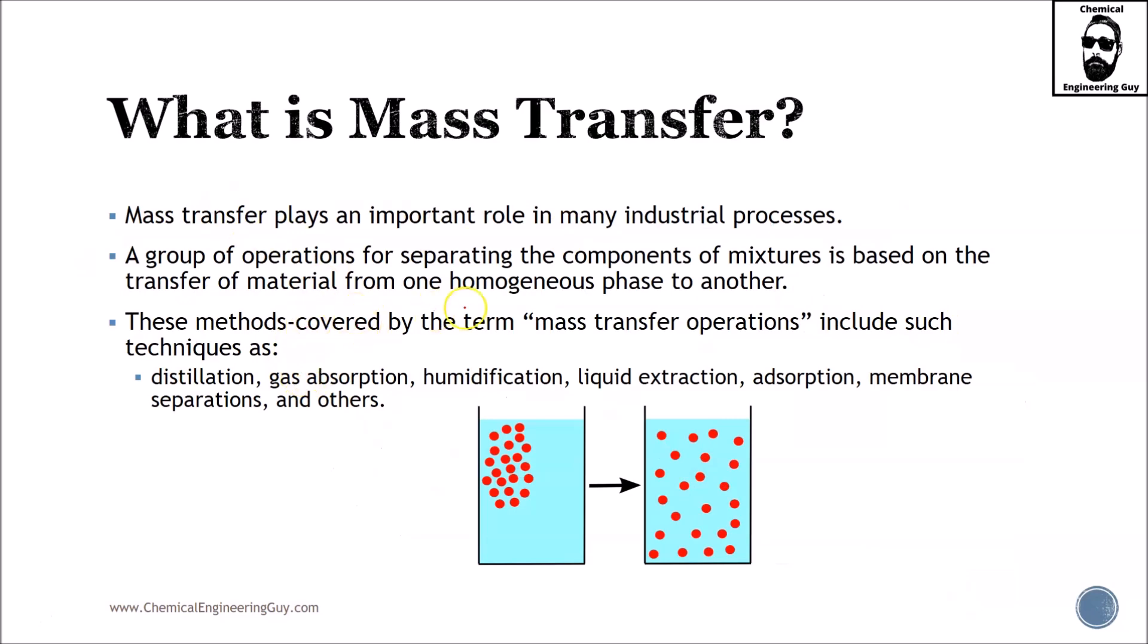Mass transfer plays an important role in many industrial processes. A group of operations for separating the components of mixtures is based on the transfer of material or mass transfer from one homogeneous phase to another. So this is also interesting: homogeneous phases, not always the case, but in the industry is what we mostly use.